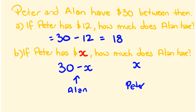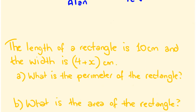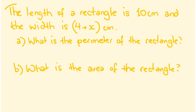We can substitute values to check. Say Peter has 10 dollars: 30 take away 10 is 20, and 10 plus 20 is 30 — correct. It's worth substituting a few values when you're first doing these, just to make yourself comfortable with them.